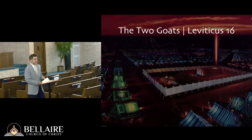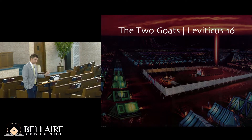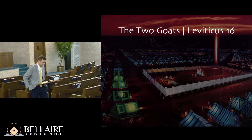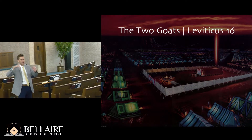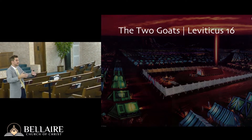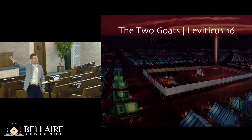Let's look at the instructions in Leviticus 16, the Day of Atonement. Notably, chapter 16 verse 1 begins: 'The Lord spoke to Moses after the death of the two sons of Aaron, when they drew near before the Lord and died.' All the instructions for the Day of Atonement start with a reminder of Nadab and Abihu's careless, flippant approach before the Lord in a way he hadn't commanded, and the consequence of that.